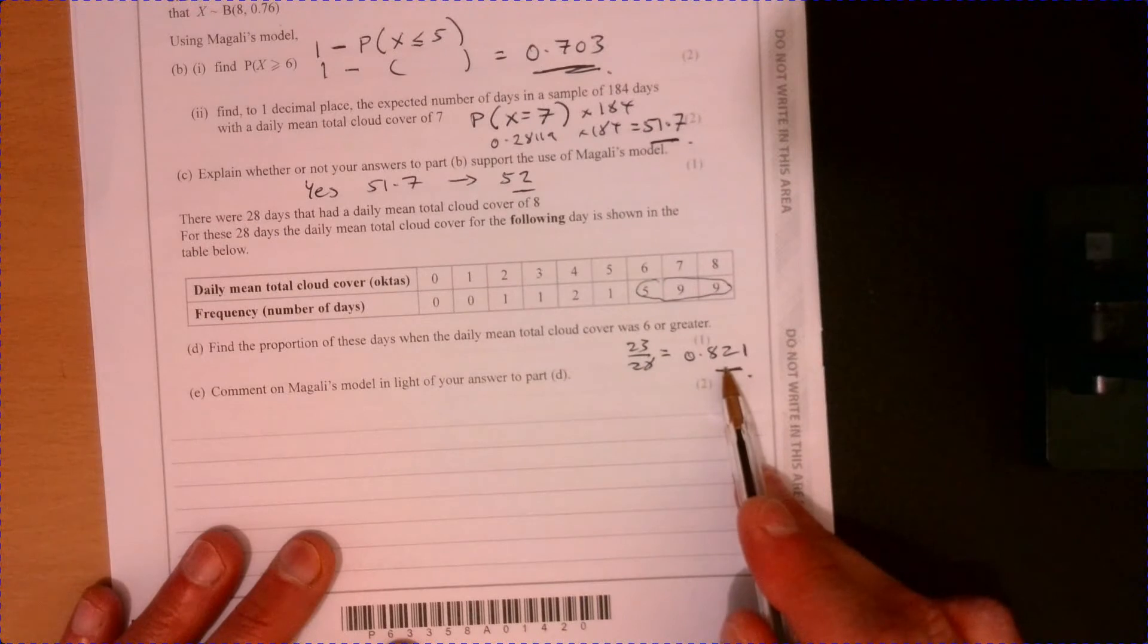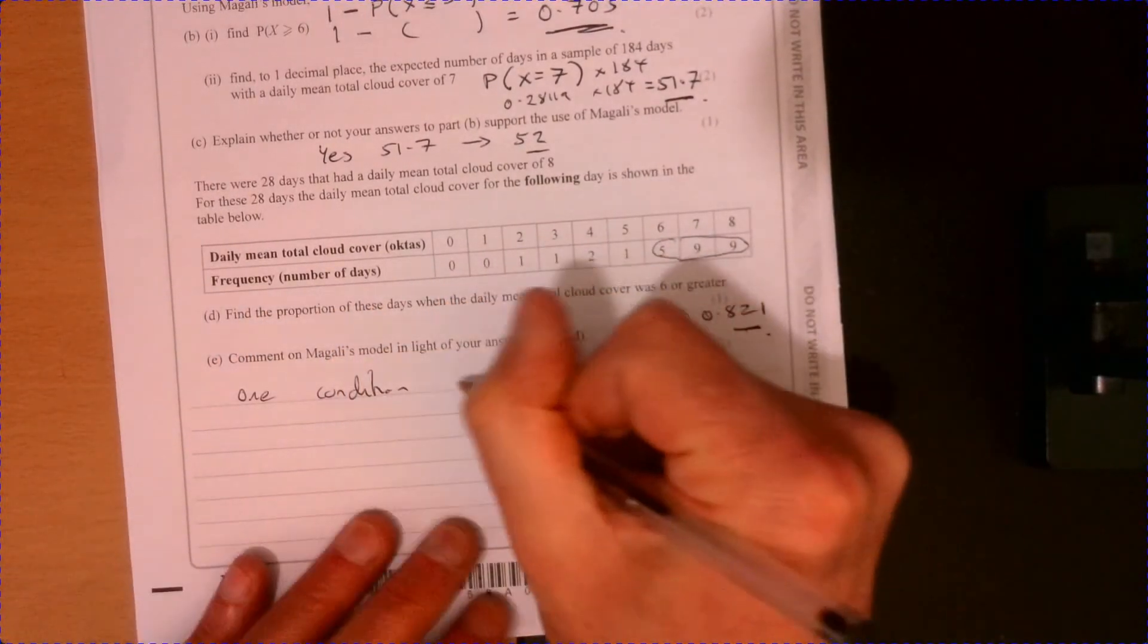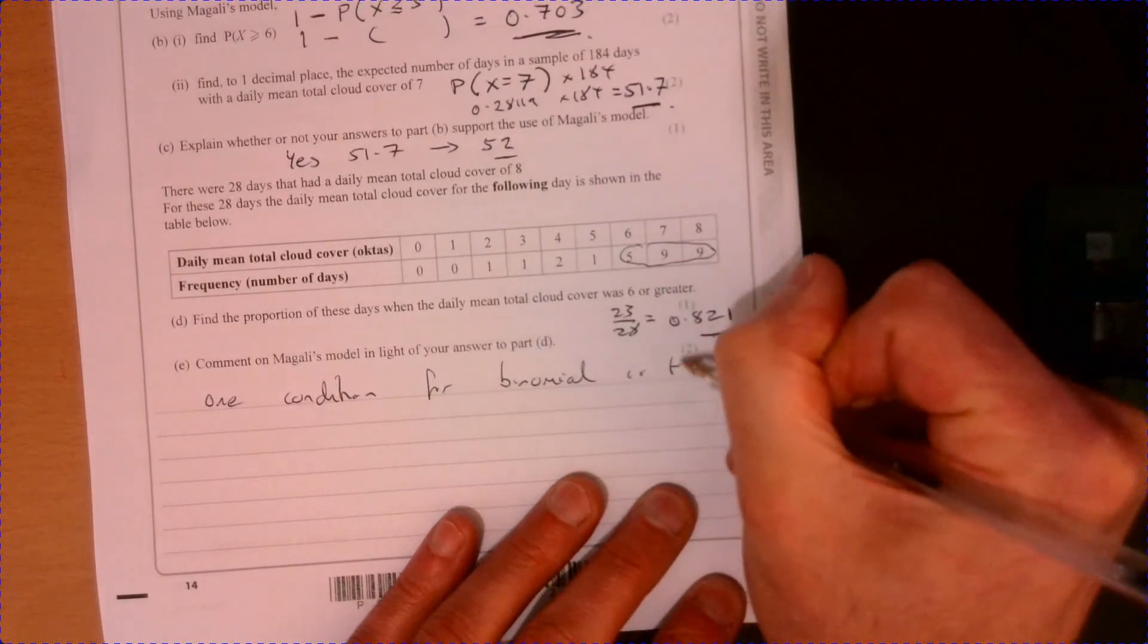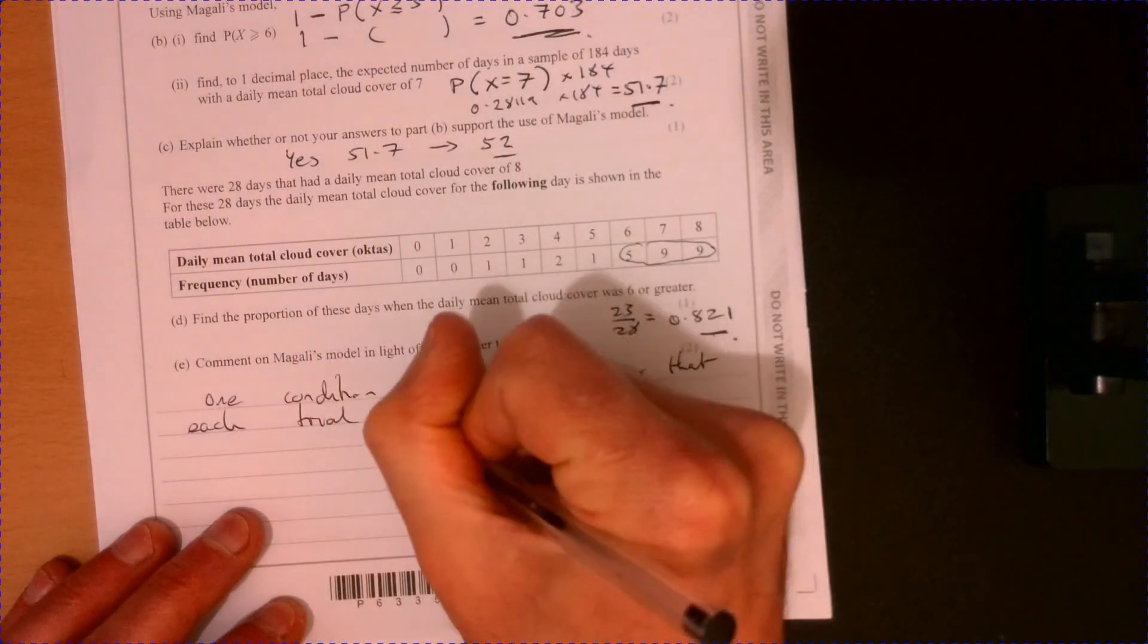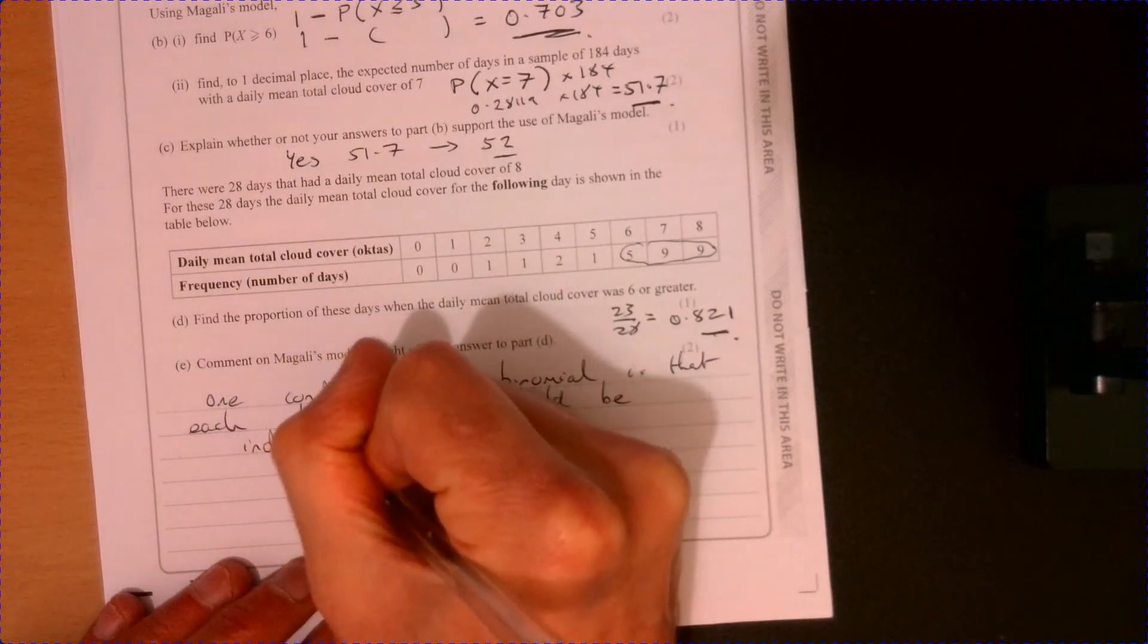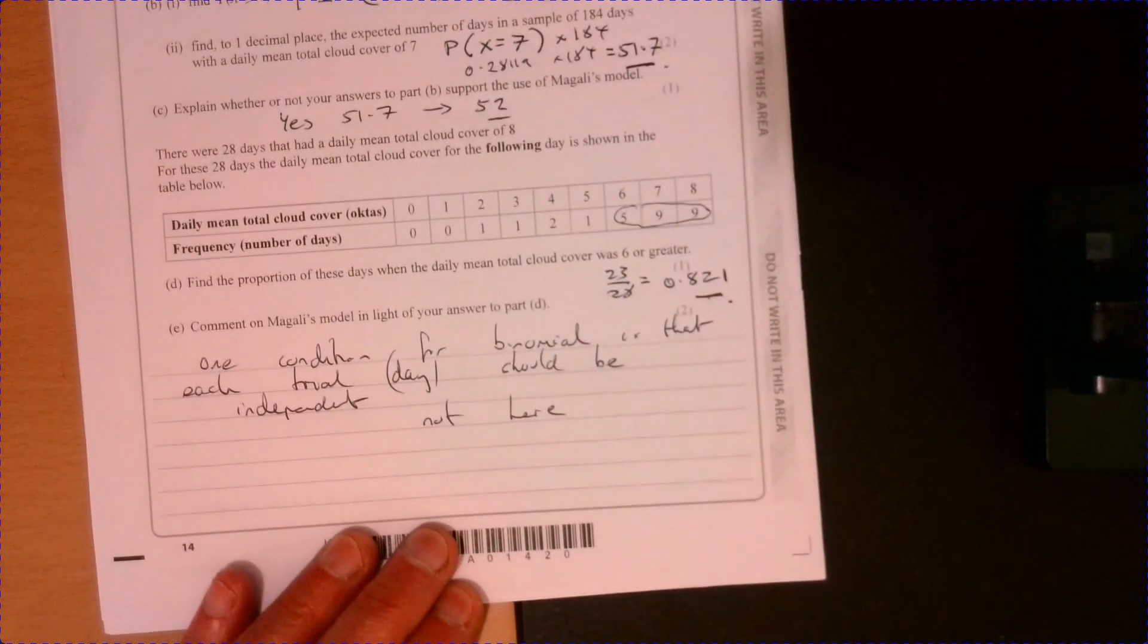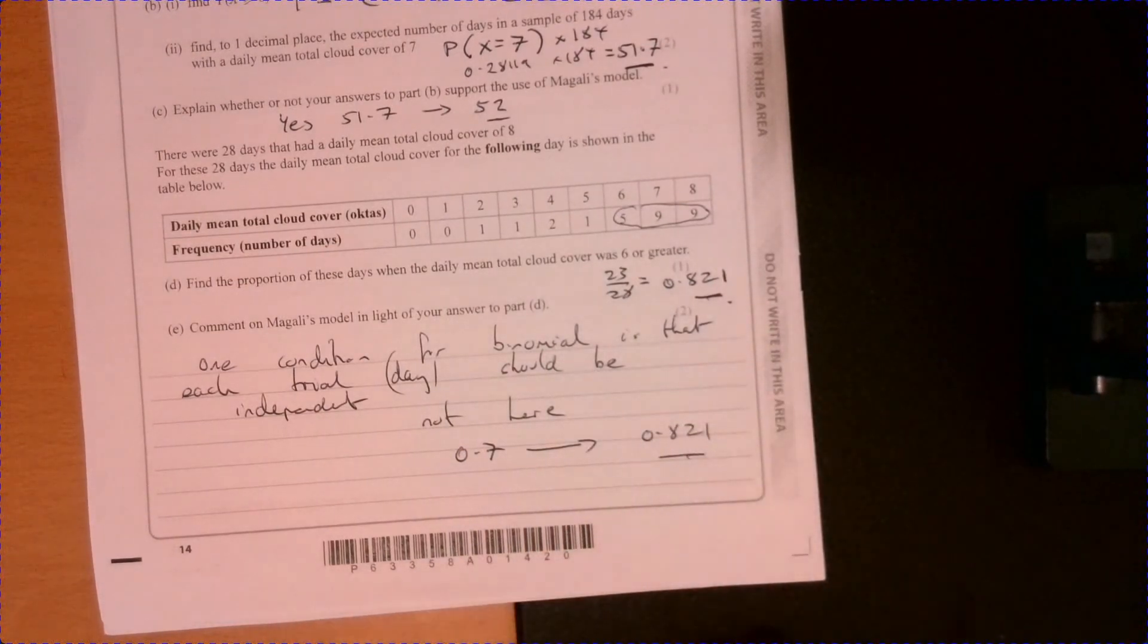And the reason for that is because it suggests it's not independent. So one condition for binomial is that each trial, or in this case, we're talking about day, should be independent. And in this case, it's not here. Because if you look at those two values of 0.7 and 0.821, that is quite significantly different.